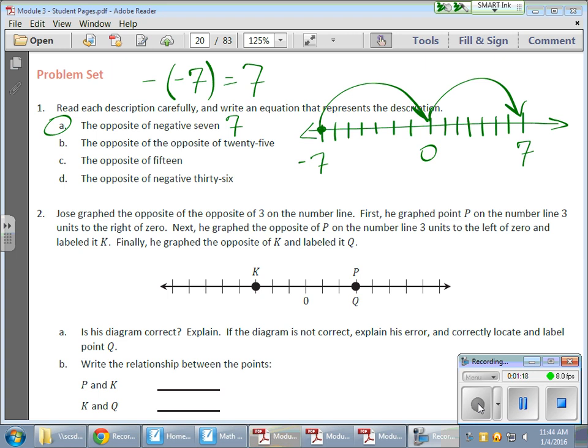So that negative symbol represents, or can represent, two different things. It could represent the fact that the value is on the left side of 0, or it's a negative value, or it's representing what an opposite is.